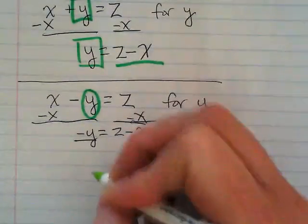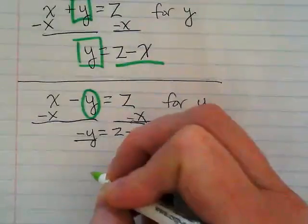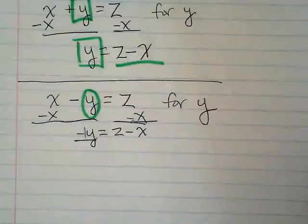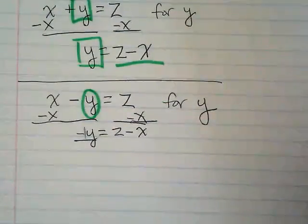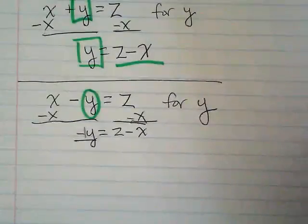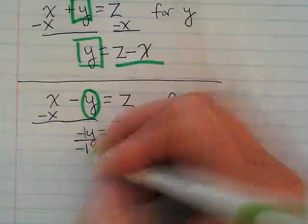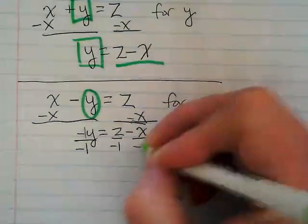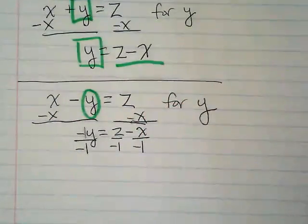Because I want to keep the Y there, but I want it to be positive. And because it has a negative in front of it, that really means it's a negative 1Y. To get the Y by itself, I need to divide by negative one. If I do that, I have to do it to the entire equation.